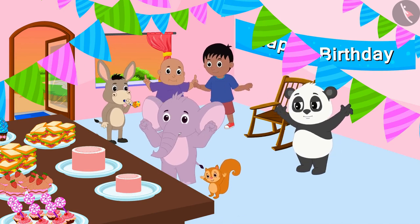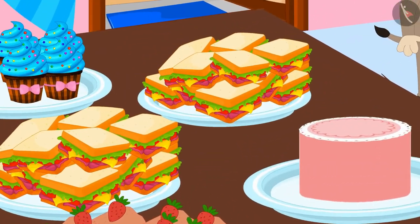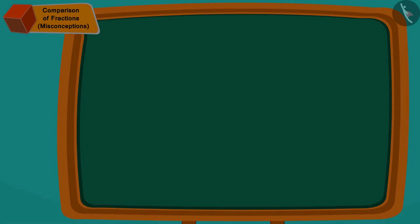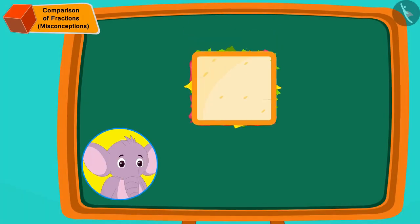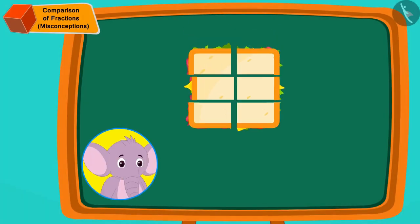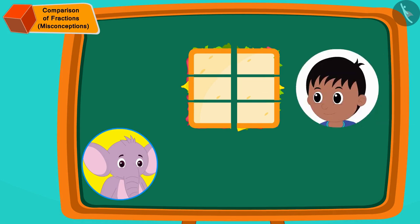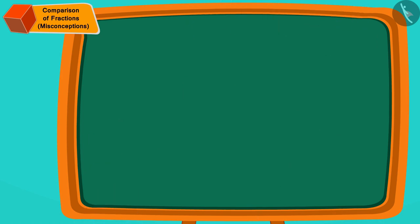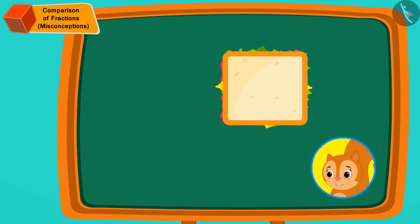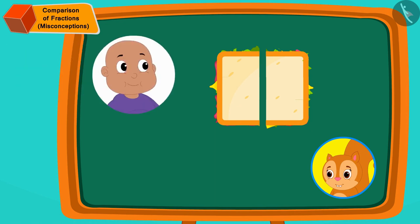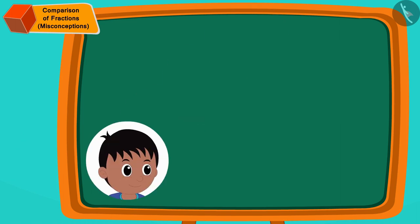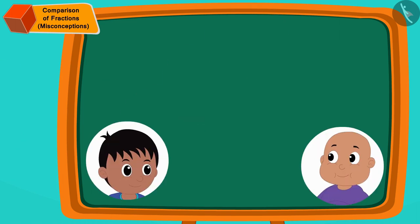Now Appu and Chanda have made delicious sandwiches for all the party guests. Appu cut the sandwich into six equal pieces and gave Rajoo one piece, or one-sixth part. While Chanda cut her sandwich into two equal parts and gave Babloo one piece, or one-half part.